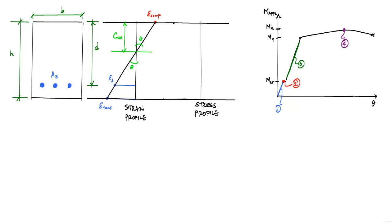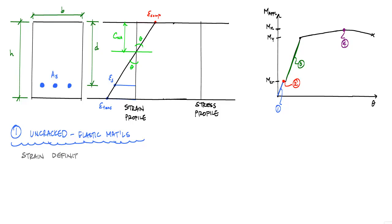Let's start by looking at stage one, where we have uncracked concrete and materials are elastic — they remain in their linear elastic regions. In terms of strains, this means the strain at the tensile fiber, at the bottom of my beam, which is made of concrete, is less than the tensile rupture strain of concrete, epsilon r. This inequality implies that we are uncracked.